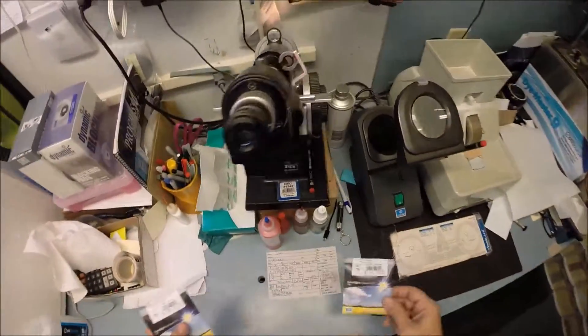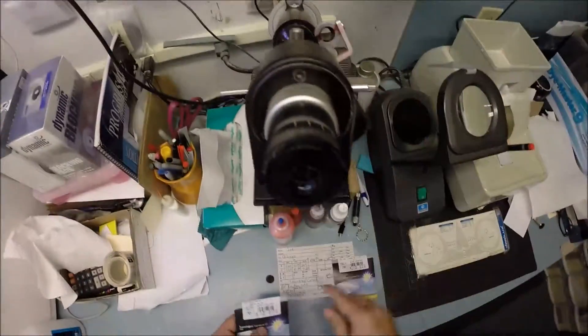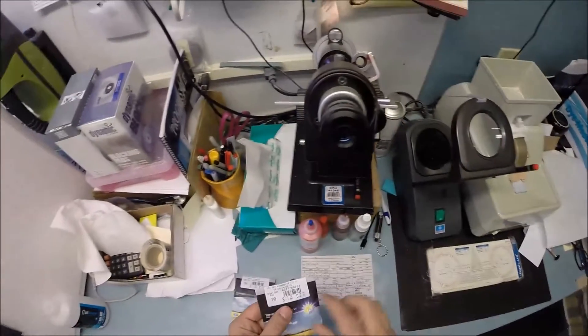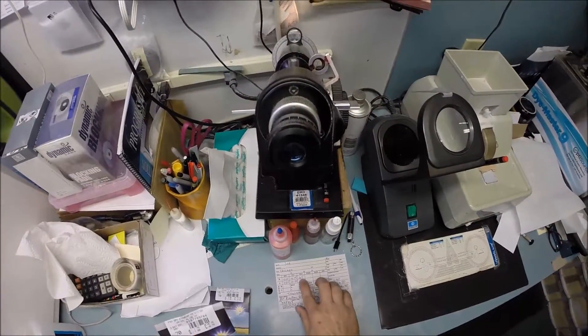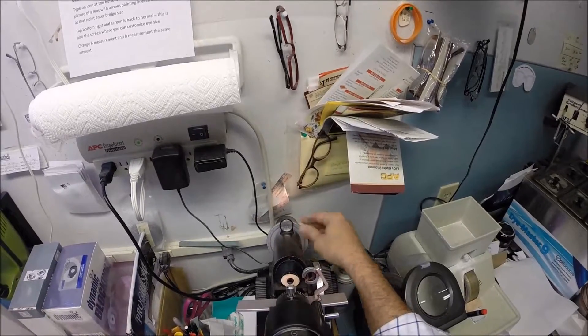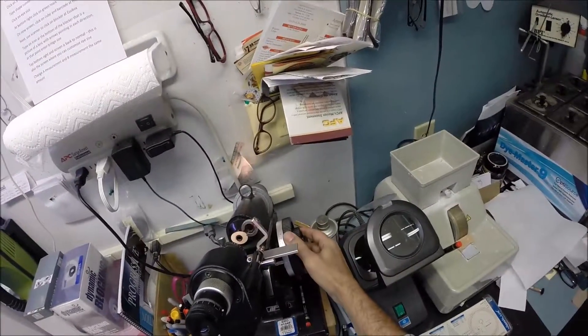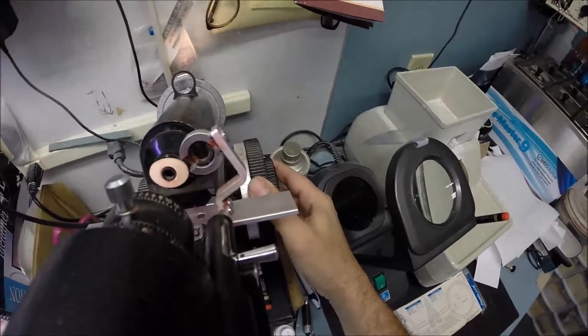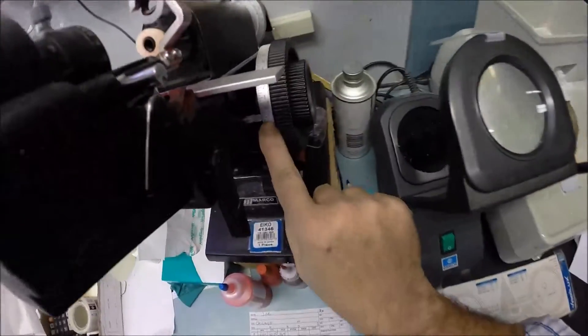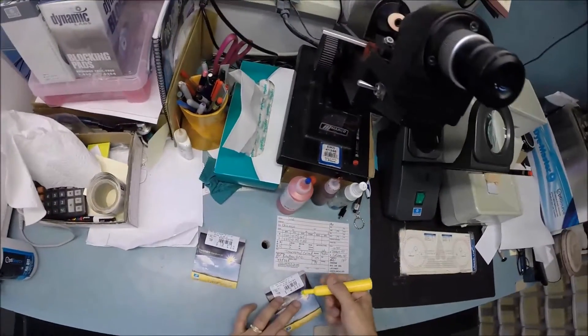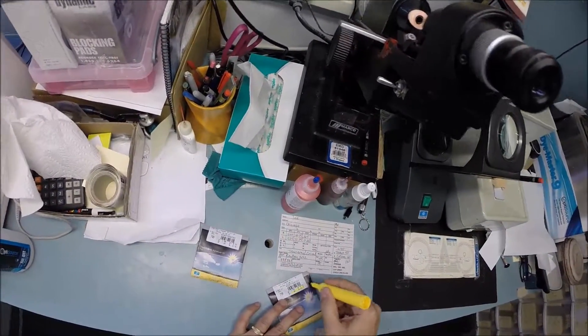I'm going to take your lenses down to my Marco 101 lensometer. Your right eye reads minus 1 minus 75, and your left lens is minus 1 minus 75 at 165. I'm going to spin the axis wheel to 165 and put the power drum on minus 1.